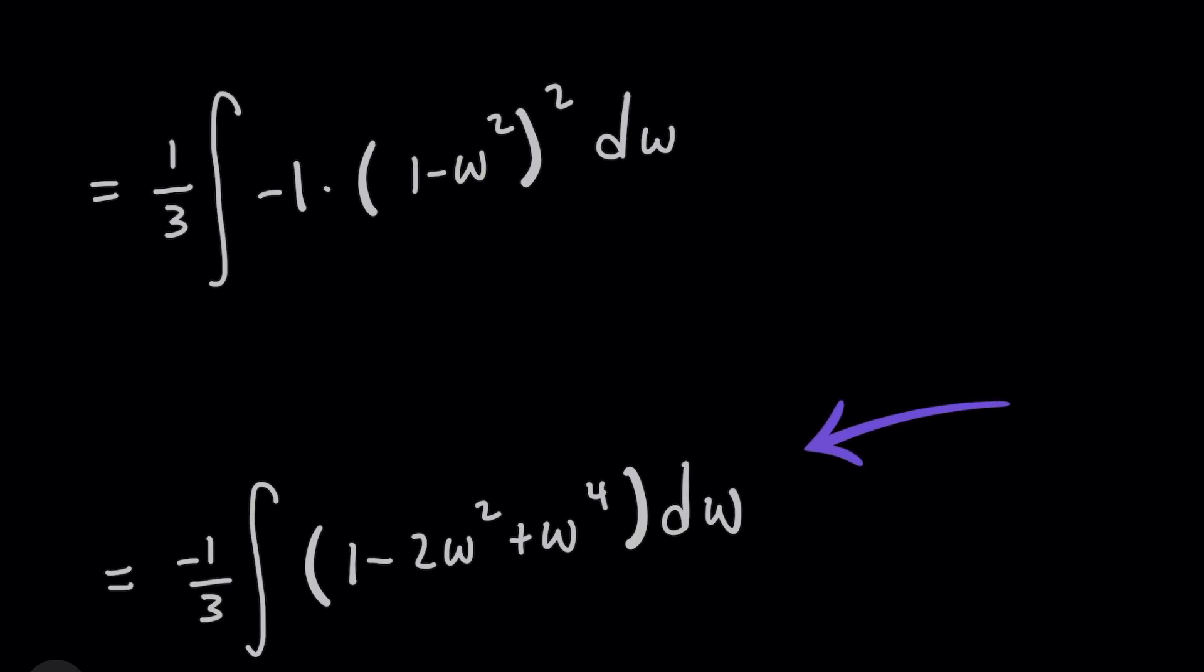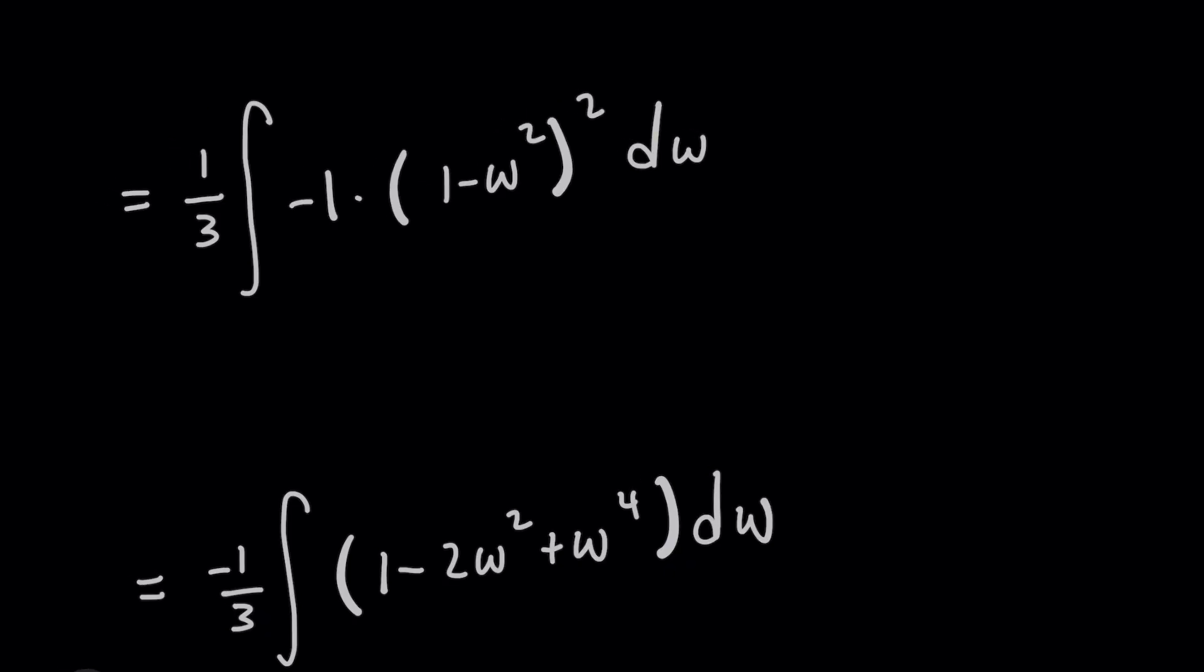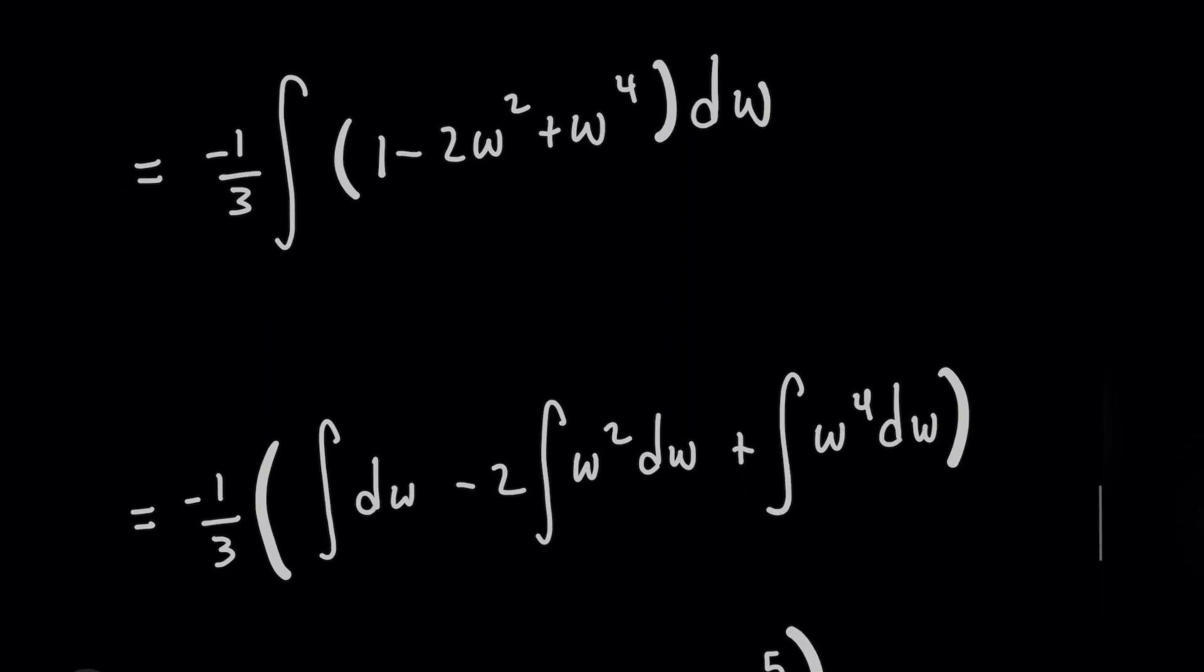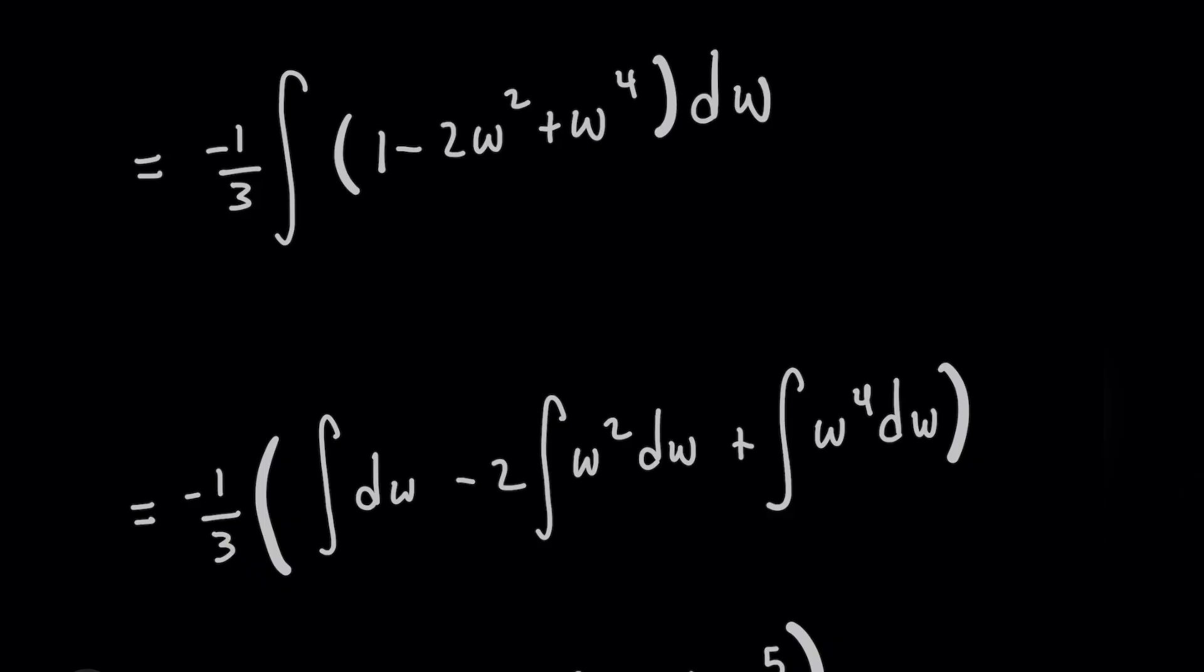And if you remember, when you have an expression like this, where you're adding and subtracting terms, you can break this up into several different separate integrals. And each one's easy. So I'm going to keep the negative one third factor out. And now I'm going to have the integral of the first part, which is this dw minus two, bringing that constant out, where we now integrate w squared dw. And then finally, we're going to integrate w to the fourth dw.